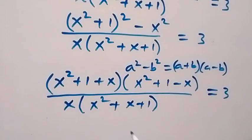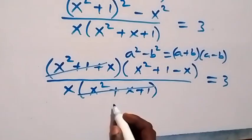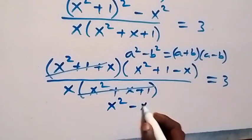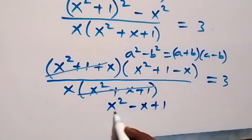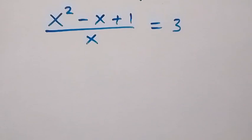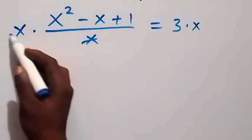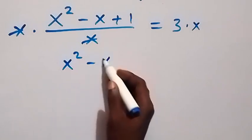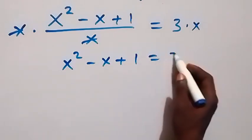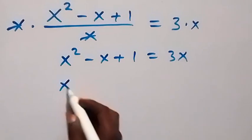Now x squared plus 1 plus x is the same as x squared plus x plus 1, so this bracket is the same as the one in the denominator and they cancel out. We are left with x squared minus x plus 1 over x equals 3. We then multiply both sides by x, and we get x squared minus x plus 1 equals 3x.